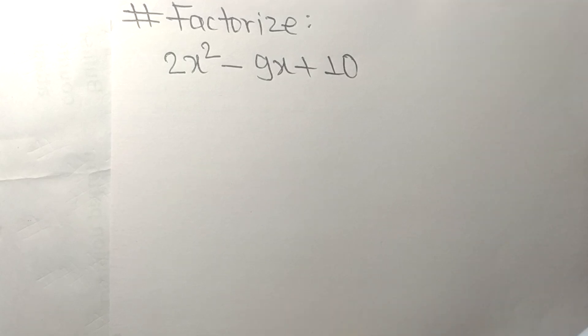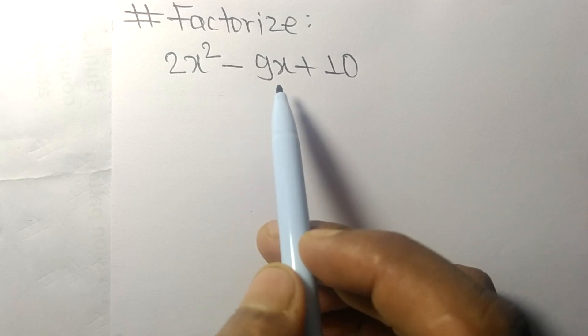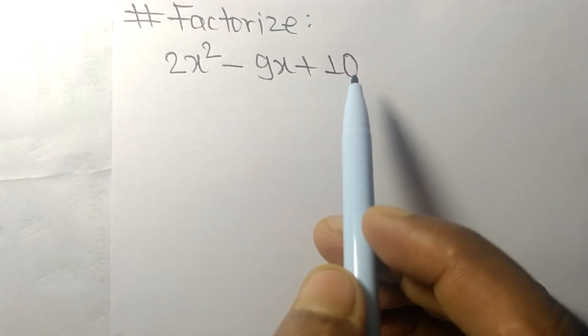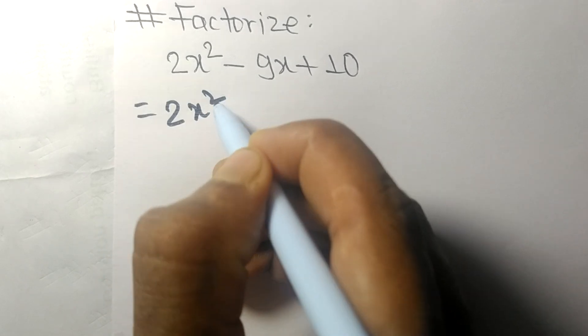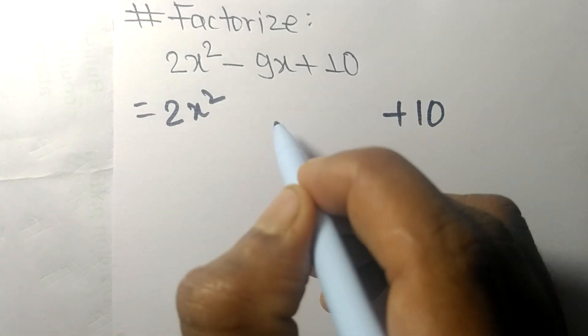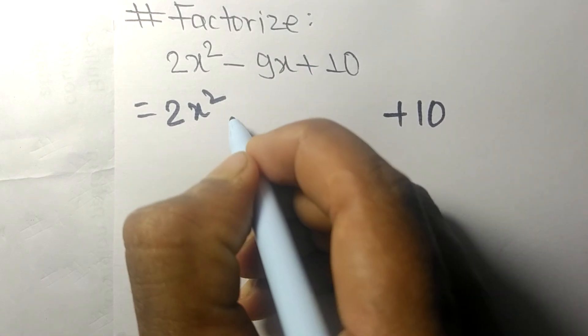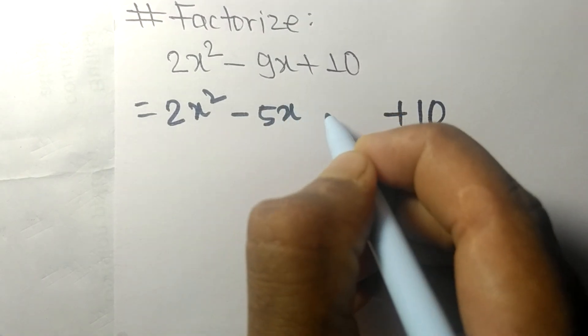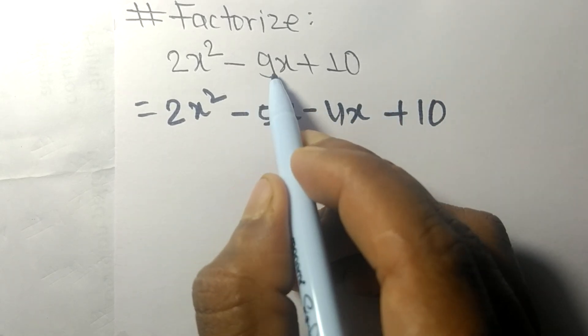Today in this video we shall factorize 2x² - 9x + 10. Here, 2x² and the last term 10 are both positive, so the middle term is -9x. We split this as -5x - 4x, which equals -9x. We verify: 4 times 5 equals 20, and 2 times 10 equals 20.